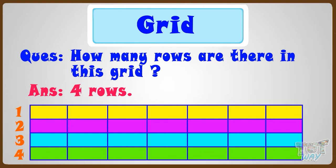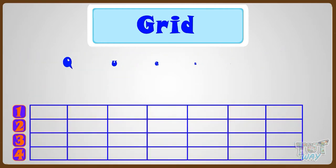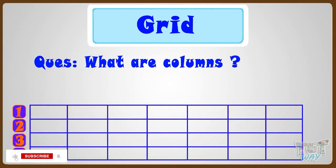So let the names of rows be one, two, three, four. Now let's see what are columns and how many columns are there.